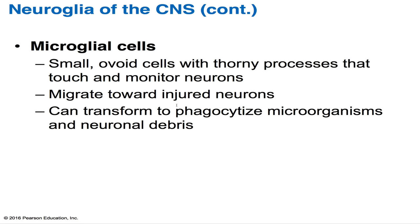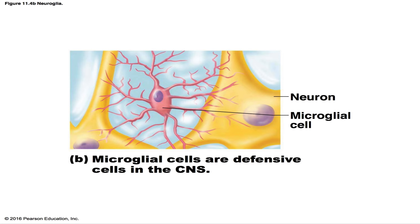Microglial cells are small ovoid cells with long thorny processes that touch and monitor nearby neurons. When a microglial cell detects that a neuron is in danger, injured, or declining in health, it migrates toward that neuron and transforms into a macrophage. This macrophage can then phagocytize the dead neuron, microorganisms, or neural debris. This protective role is critical because the immune system cells cannot enter the CNS due to the blood-brain barrier.